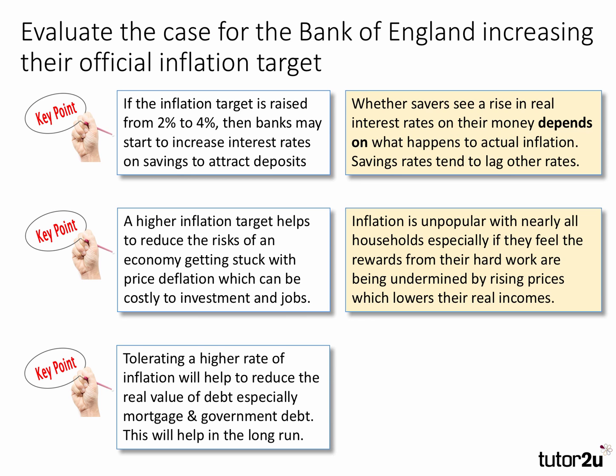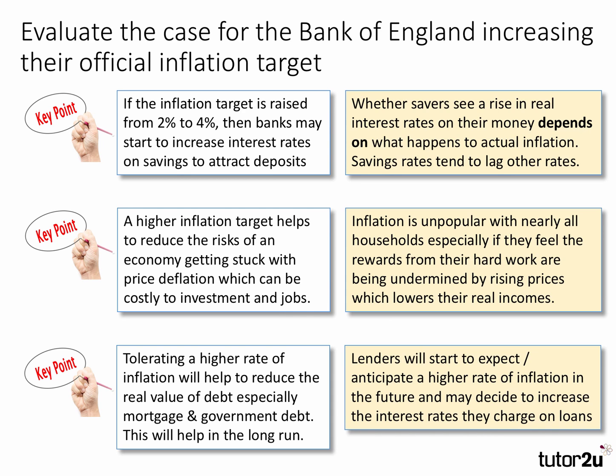Third point: if we tolerate a higher inflation, let's say 3% to 4%, that may help to reduce the real value of debt — especially mortgage debt and government debt. This will help the economy in the long term because the real value of debt will shrink a little bit more quickly. But the counter-evaluation argument is that lenders will start to expect and perhaps anticipate a higher rate of inflation in the future, and they may decide therefore to increase the interest rates they charge on loans. So although the real value of debt may come down in absolute terms, the cost of servicing the debt may go up.